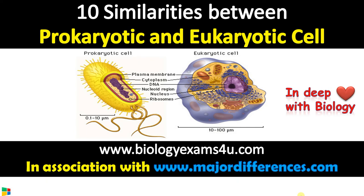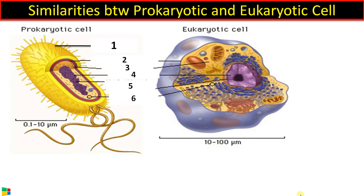Hi friends, once again back to biology exams4u.com. In this short video we are going to discuss the similarities between prokaryotic and eukaryotic cells. This is a bacterial cell, or a prokaryotic cell, which is unicellular, and this is a eukaryotic cell — an animal cell.